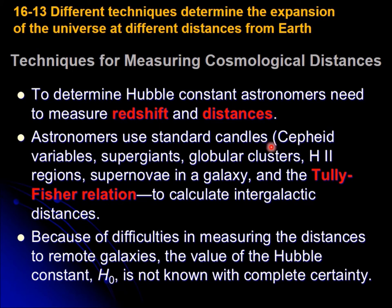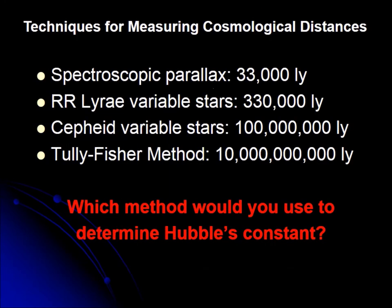Not only that — we can also do it through supernovae and globular clusters, etc. There are different techniques used to measure distances for different objects. And for galaxies, there is the technique known as the Tully-Fisher relation, which is a very interesting one. It is because of the difficulties in finding that distance that we cannot know exactly that H₀ is exactly 71 kilometers per second per megaparsec. The four techniques include spectroscopic parallax, which allows you to calculate distances up to 33,000 light years.